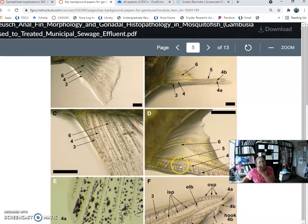So the gonopodium is a fusion of anal fin rays 3, 4, and 5 fused together, and that's used to deliver the sperm to the female Gambusia, and they give live birth. So they're in the Poeciliidae family.